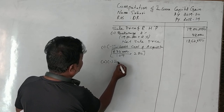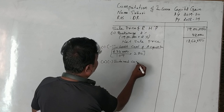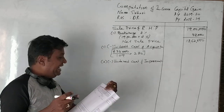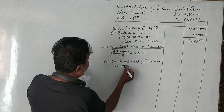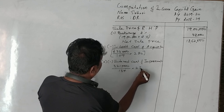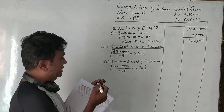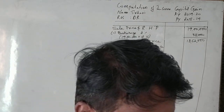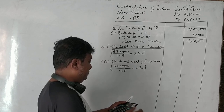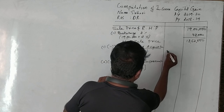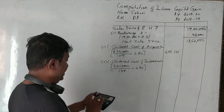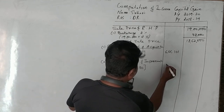The second deduction is the indexed cost of improvement. He improved the property in 2008-09 by spending Rs. 3,21,000. CII for 2008-09 is 137 and for 2018-19 is 280. So indexed cost of acquisition is 2,34,000 / 109 × 280 = Rs. 6,01,100, and indexed cost of improvement is 3,21,000 / 137 × 280 = Rs. 6,56,204 (approx Rs. 6,56,000).